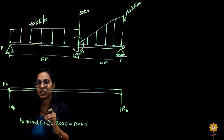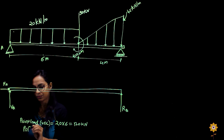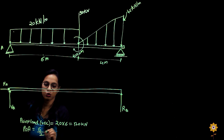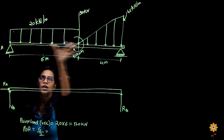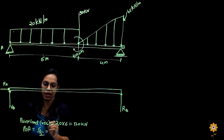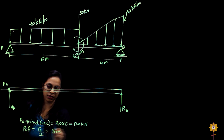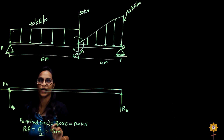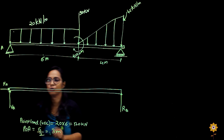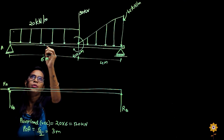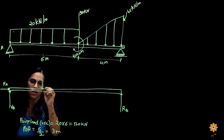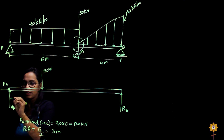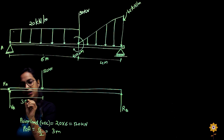But where will that point load act? The point of application is the distance divided by 2. Whatever distance is given for the whole UDL section, divide it by 2 — that is 6 by 2, because the UDL is over a span of 6 meters. So dividing by 2 gives the application point of the 120 kilo Newton point load, which acts at a distance of 3 meters.